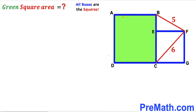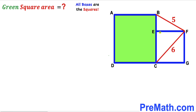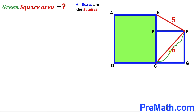Welcome to PreMath. In this video we have got this green shaded square ABCD and this smaller square EFGC put together as you can see in this given diagram, such that this diagonal FC is 6 units, whereas this segment BF is 5 units. Our task is to calculate the area of this green shaded square ABCD.